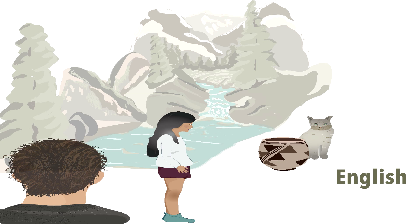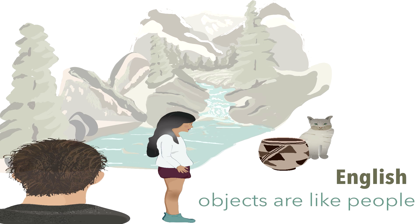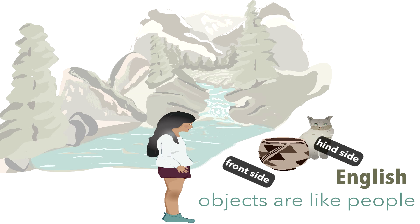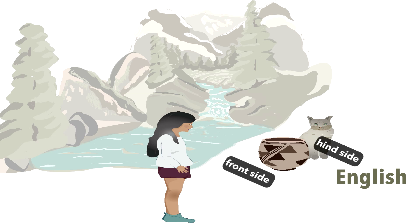This is because, for purposes of describing locations, English invites us to perceive inanimate objects as if they're people, or at least animate beings of some kind. Because of this, when we're looking at the clay pot, we implicitly think of it as having a front — a side with a face — and a back, or hind side, with its face toward us. As a result, we conceive of the cat as being on the back side of, or behind, the clay pot.